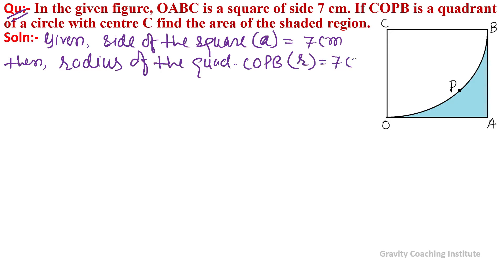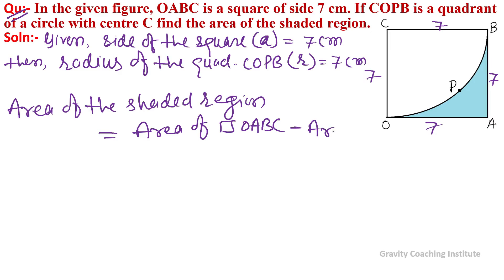Area of the shaded region equals area of square OABC minus area of the quadrant COPB.